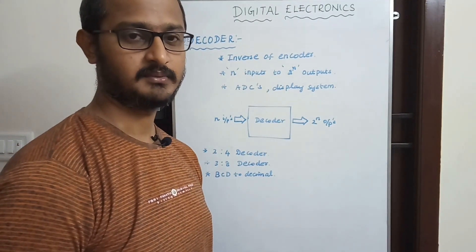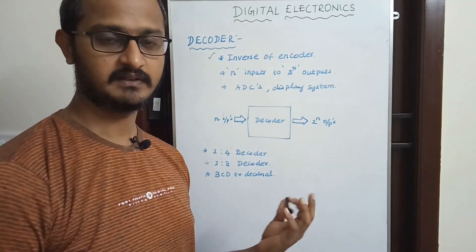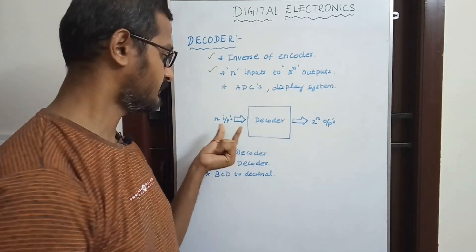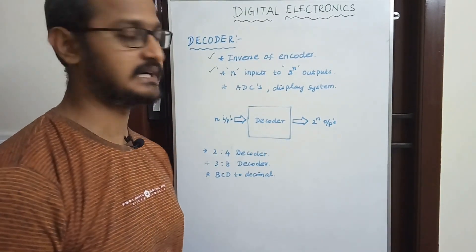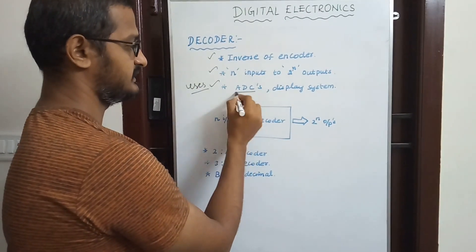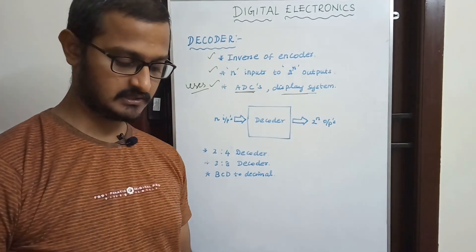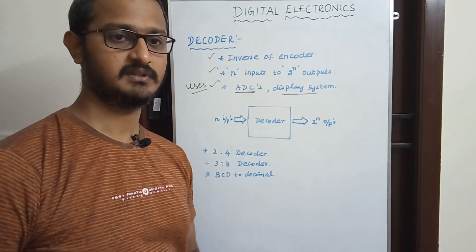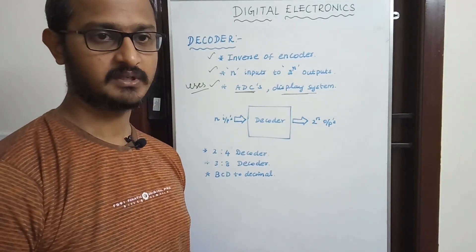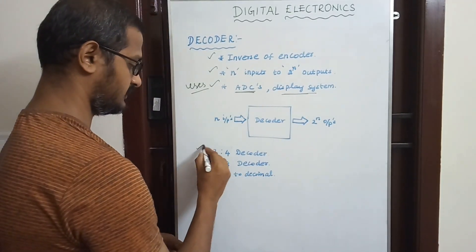Next topic: decoder. A decoder is the inverse of an encoder. It takes n number of inputs and produces 2 to the power of n number of outputs. We use decoders in ADCs — analog to digital converters — and display systems. In communication, encoders are used on the transmission side and decoders on the reception side. Types include 2-to-4, 3-to-8, and BCD-to-decimal decoders.